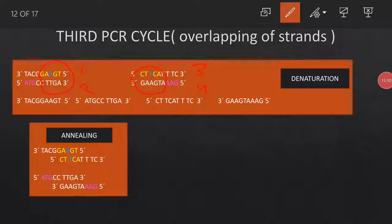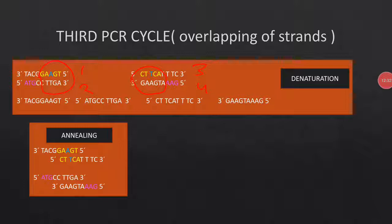After denaturation, there are equal 50/50 chances that strand one can bind to strand two or strand three, as both are complementary to strand one. Similarly, strand two can bind to strand one or strand three. The same applies to strands three and four — strand three can bind to strand one or strand four, and strand four can bind to strand three or strand two.